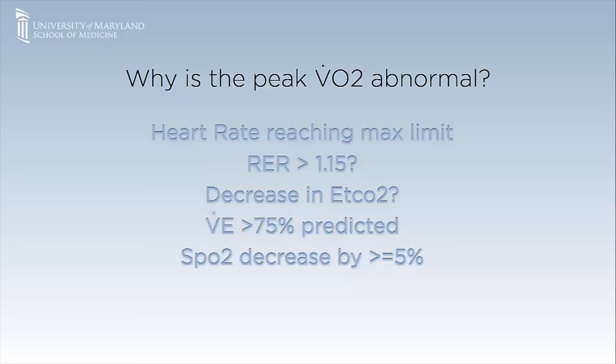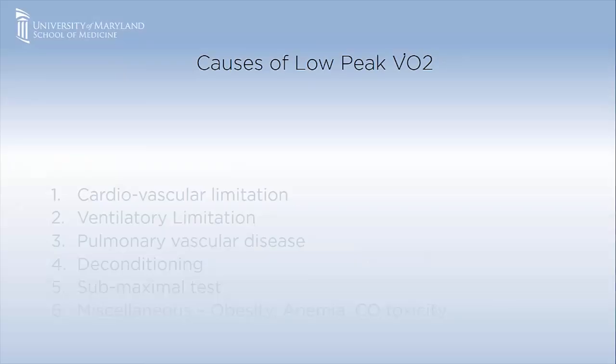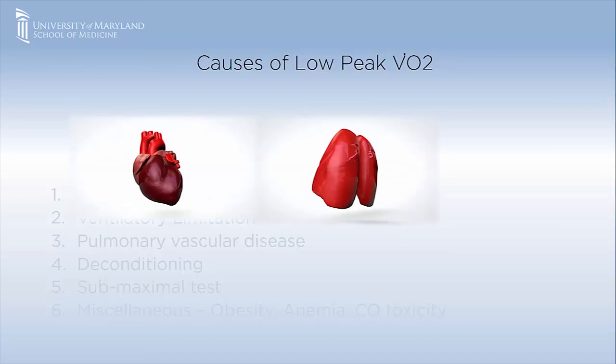Thus, why was the peak V̇O2 abnormal in this case? It was not because metabolic acidosis had started. It was not because the respiratory exchange ratio increased above 1.15, and it was not because the heart rate reached the maximum limit. Minute ventilation did reach the maximum limit, and SpO2 did not decrease by greater than 5%. Hence, the cause of exercise limitation is ventilatory. In this video, we learned about two patterns of abnormalities. Hope this video helps in demystifying the concepts behind cardiopulmonary exercise testing. Thank you.